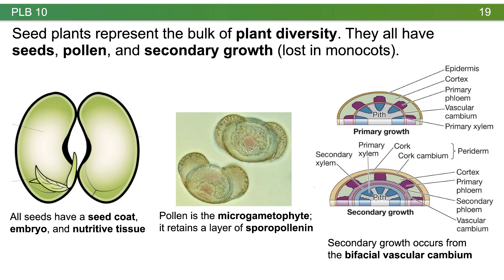Seed plants represent the bulk of plant diversity. They have seeds, pollen, and secondary growth, although secondary growth is lost in monocots. All seeds share fundamental characteristics: a seed coat derived from diploid integument layers, an embryo representing the next diploid sporophyte generation, and nutritive tissue. In gymnosperms, the nutritive tissue is the haploid remains of the mega gametophyte; in angiosperms, it is the product of double fertilization.